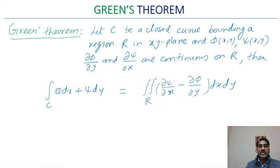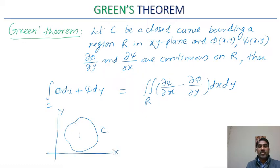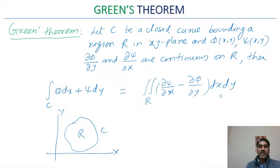For illustration, if this is some curve C in the XY plane and the region bounded by this curve C is R, then the line integral along C of Φ dx + Ψ dy can be computed as the double integral over region R, with integrand ∂Ψ/∂x − ∂Φ/∂y.